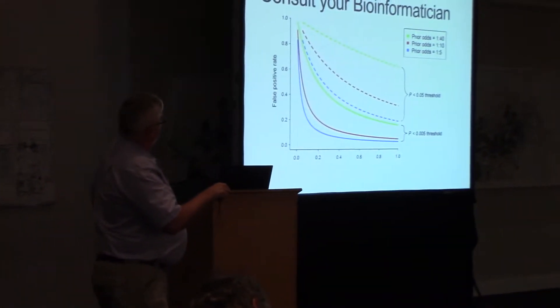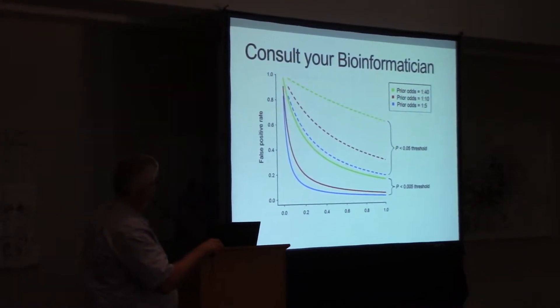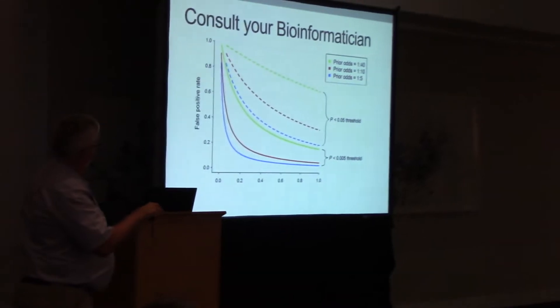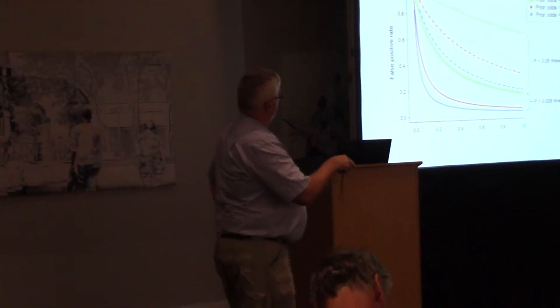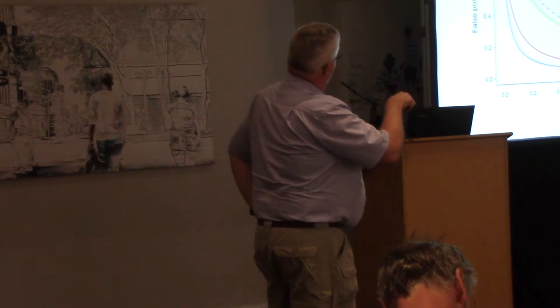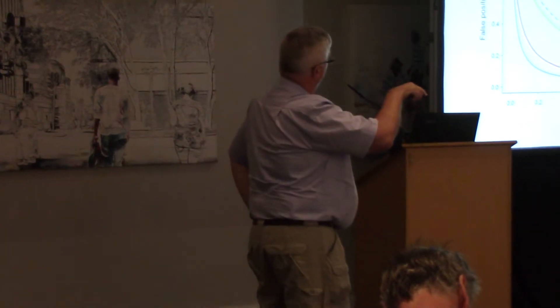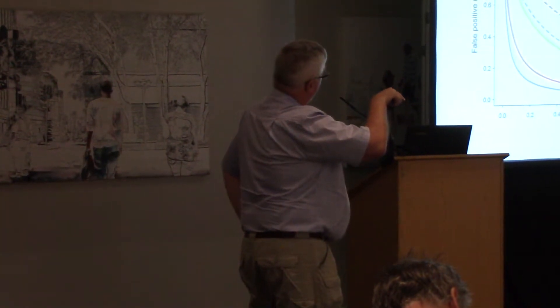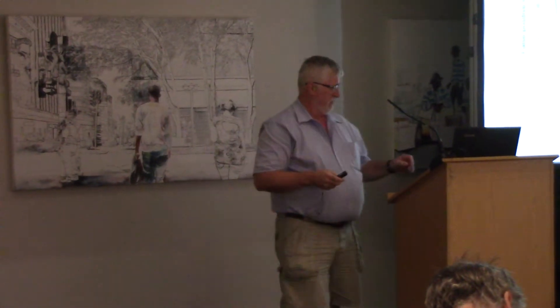The prior odds here are 1 in 40 — close to having no information — and if you've had some other experiments showing this process is likely to be true, then there's 1 in 10. If your prior odds are 1 in 5, then it's highly likely to be true. So this is the probability of false positives at various thresholds — you essentially expose yourself to a tremendous amount of false positive results if you use the wrong threshold and do multiple tests.